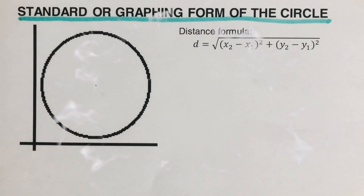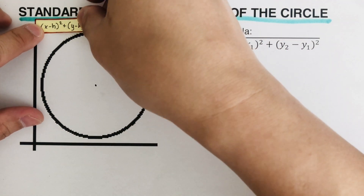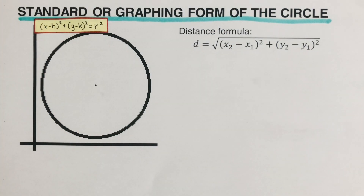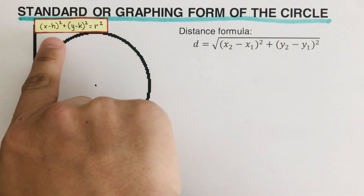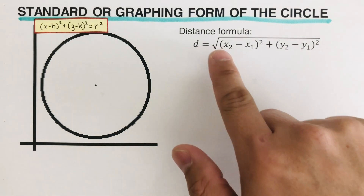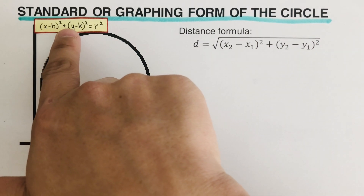This video will explain how we get the standard form or graphing form of a circle. This is the standard form or graphing form of a circle — we've used this equation in graphing the circle in other videos. But how did we get this equation, where is it coming from? We have a circle and a distance formula, and we're going to use that in deriving the standard or graphing form of a circle.